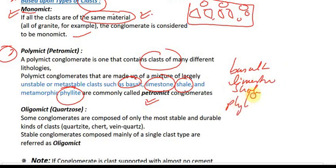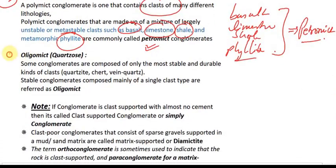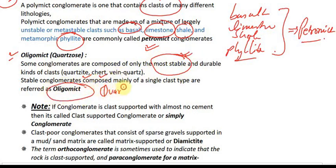If conglomerate is made from fragments of various rocks including amphibolite and others, it is petromict. Then we have oligomict conglomerate — which is made of the most stable mineral fragments, such as quartzite and chert. Oligomict is generally quartzose, meaning quartz is the most stable and dominant mineral. You need to remember: oligomict means most stable fragments, generally quartz-dominated.